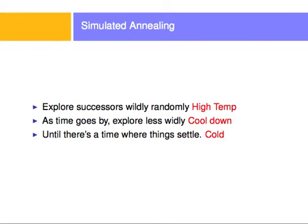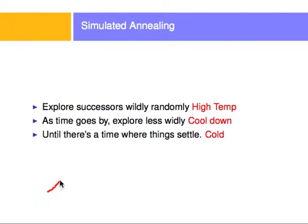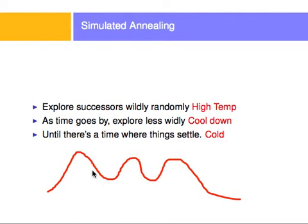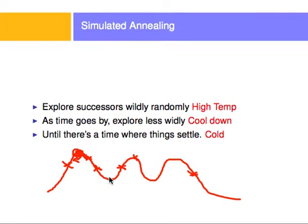There are modifications of these algorithms that actually try to solve this problem. A very popular one is simulated annealing. The idea is that you explore successors widely and randomly — we describe the system as having a high temperature, where particles move all willy-nilly. Then as time goes by, we explore less wildly; we cool down the temperature in the system. There will be a point where the system is cold and things settle. We start exploring broadly and as time goes by we explore in a narrower and narrower area until we reach the global maximum or global minimum.